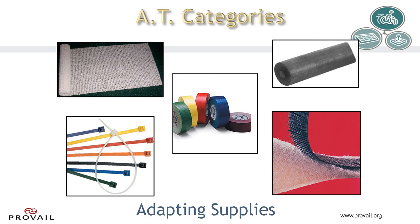This is a small sample of materials that you might employ to make everyday home situations more accessible. On the top right is some pipe insulation — a kind of rubber foam that can be added to a toothbrush or silverware so that the grip is more usable for some. Zip ties and velcro, seen on the bottom, help to keep different parts together when you are adapting how something is accessed. On the top left is simple shelf liner available at many stores — it can be very useful for keeping things like a plate or keyboard in place at the most desired position.